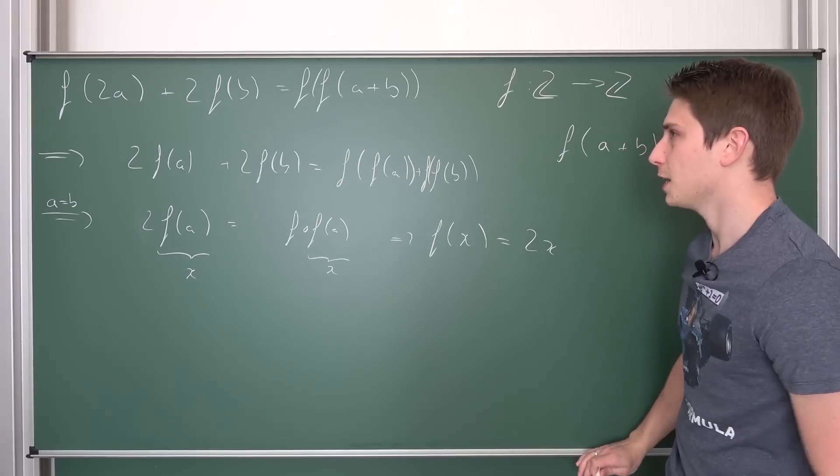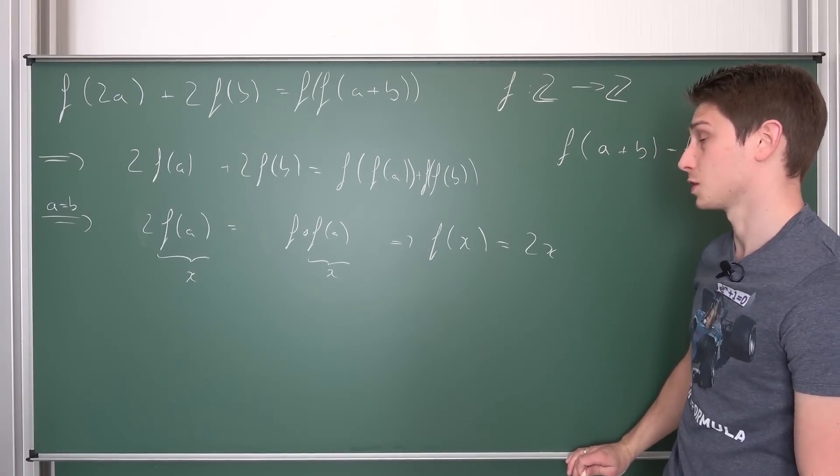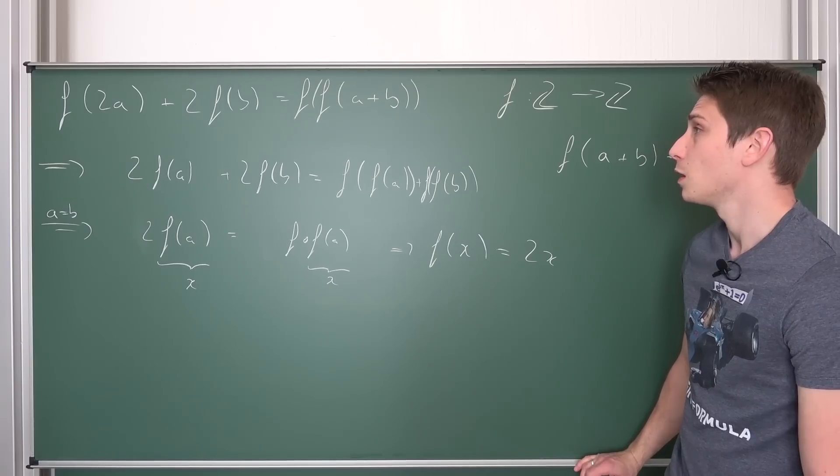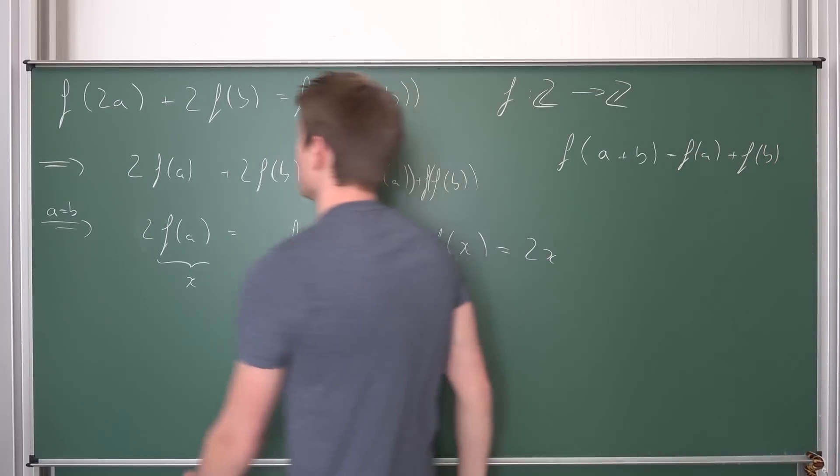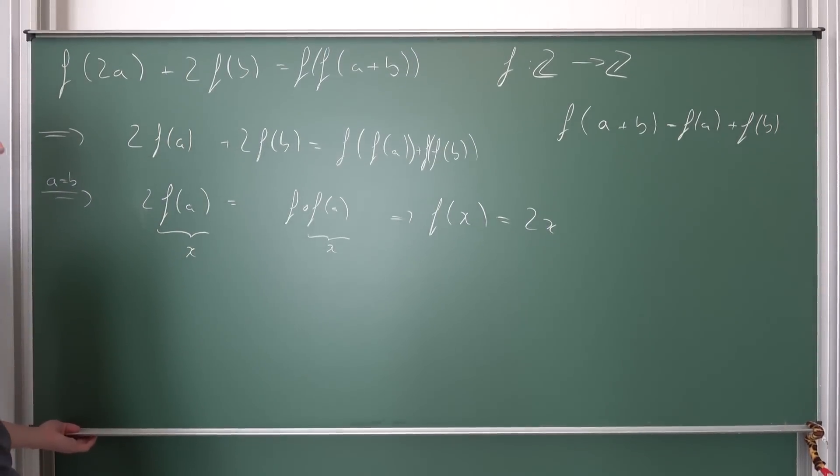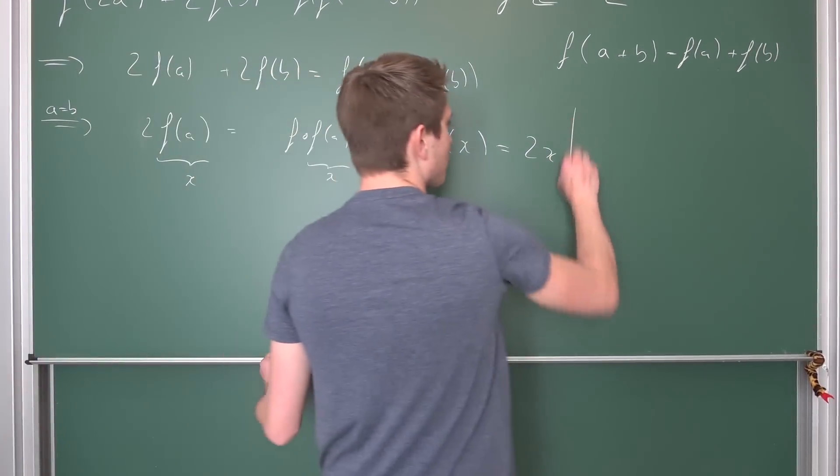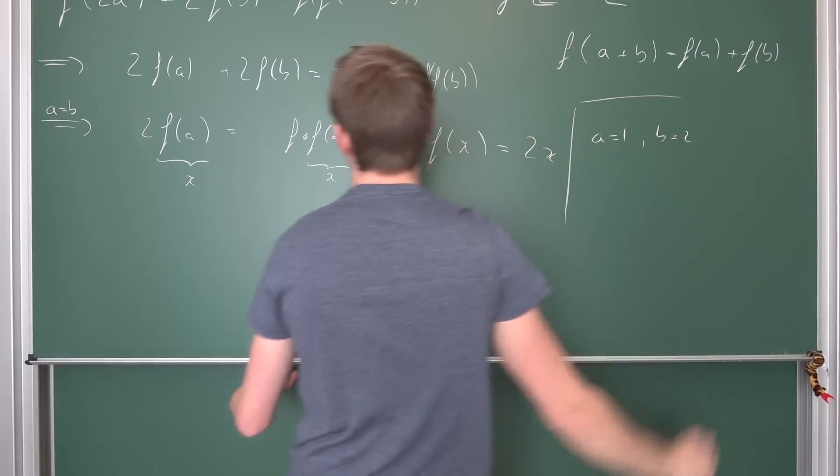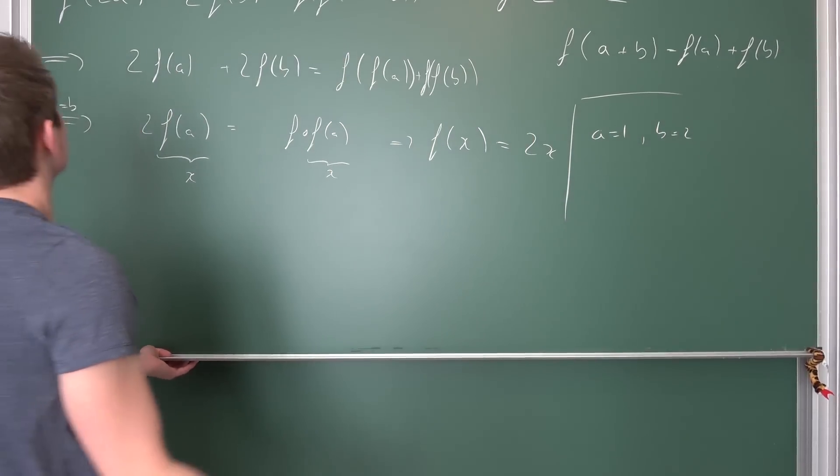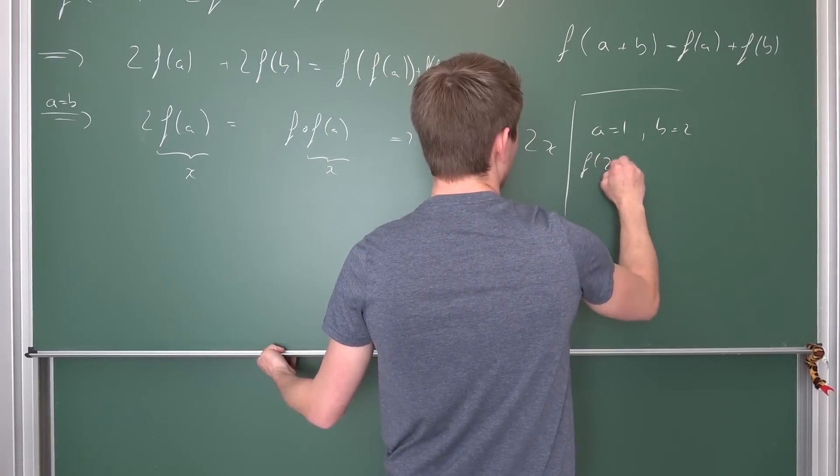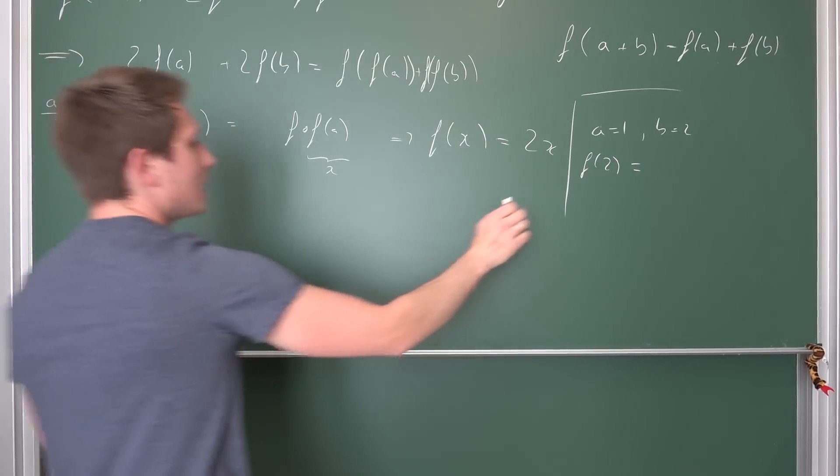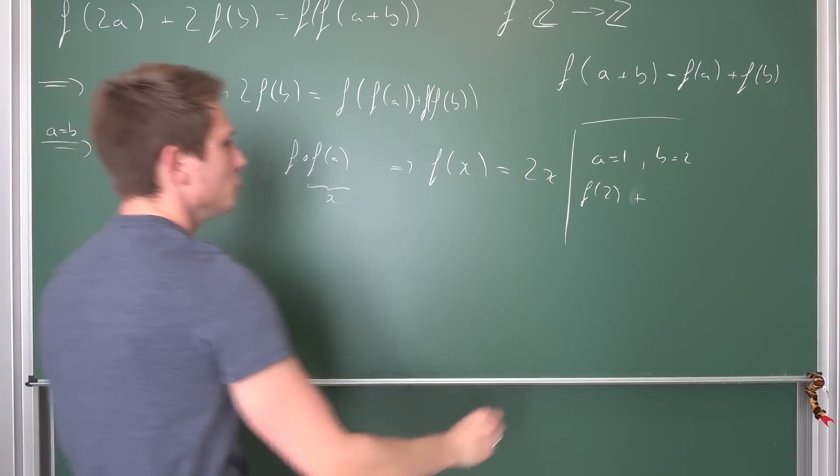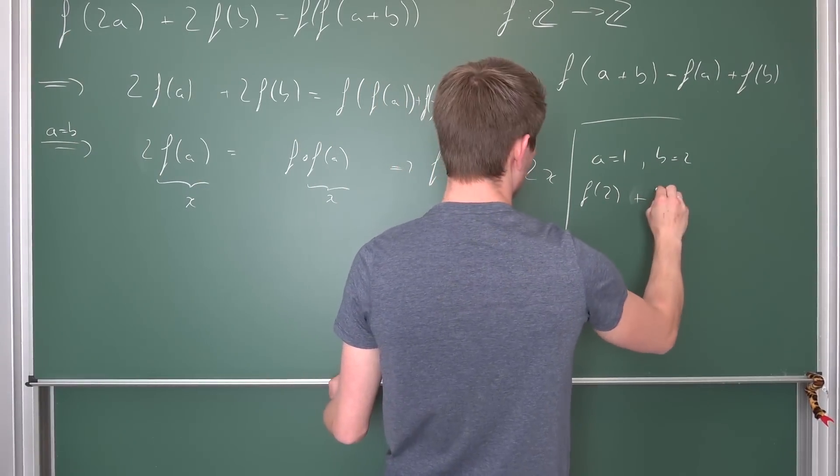The thing is, if we were to plug in actual numbers, would this work out? I'm not certain about that. So let's say a is one and b is equal to two. We are going to get f(2) + 2f(2).